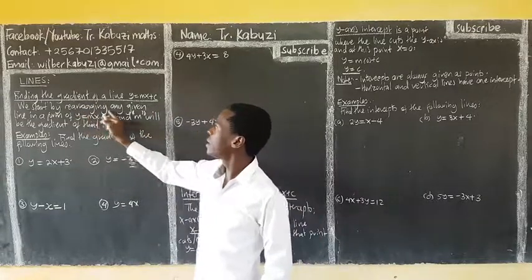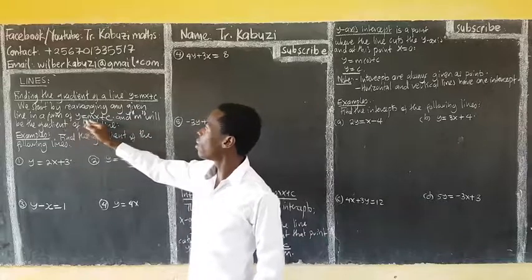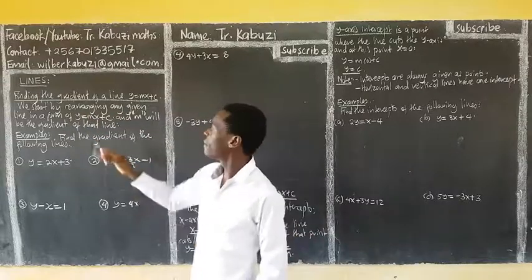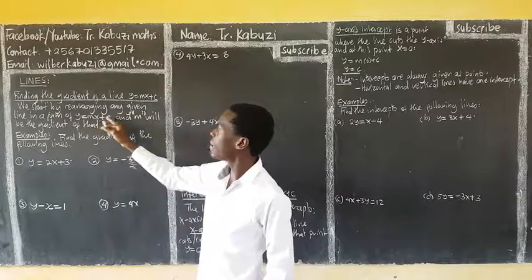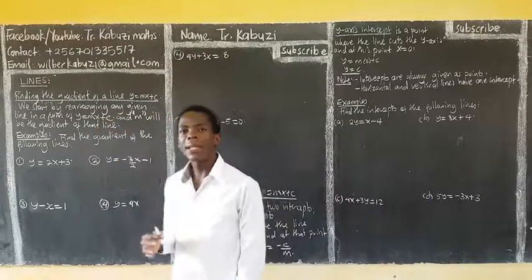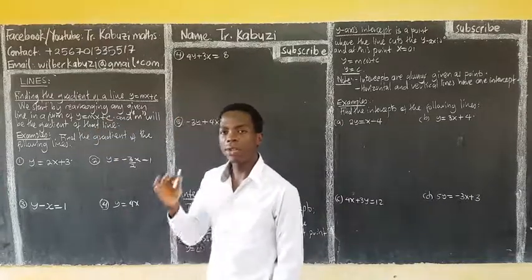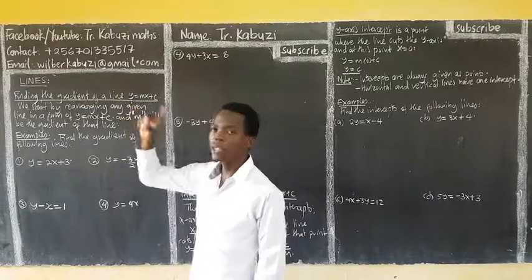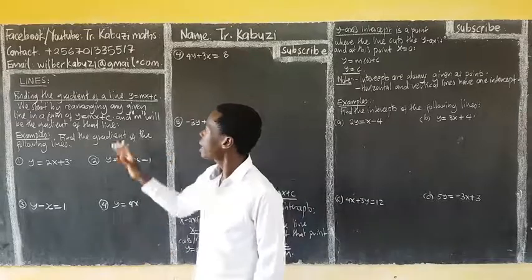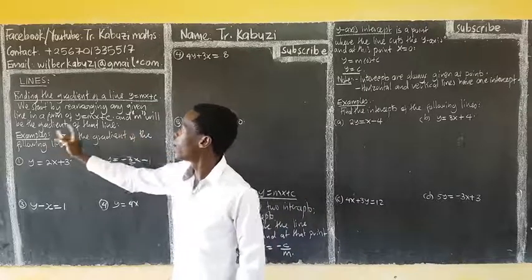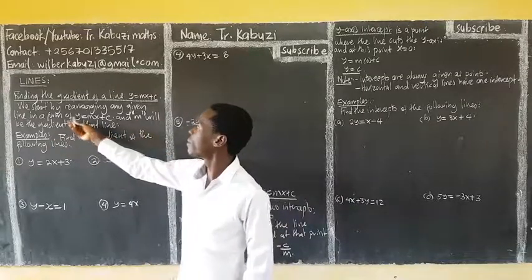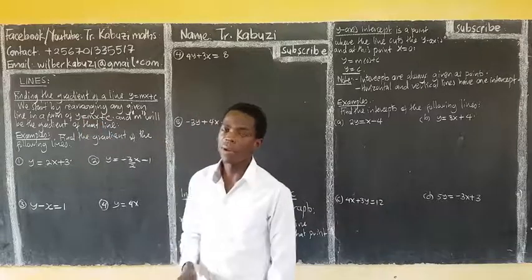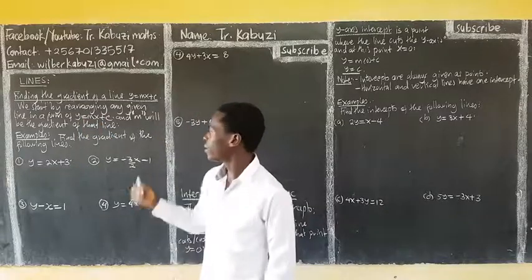We start by rearranging any line in this form. Because we say any line is in the form of y equals mx plus c. What do we mean? We mean that the coefficient of y should always be 1. And m will be the gradient of that line. So always, if this coefficient is 1, the gradient of this line is always m.